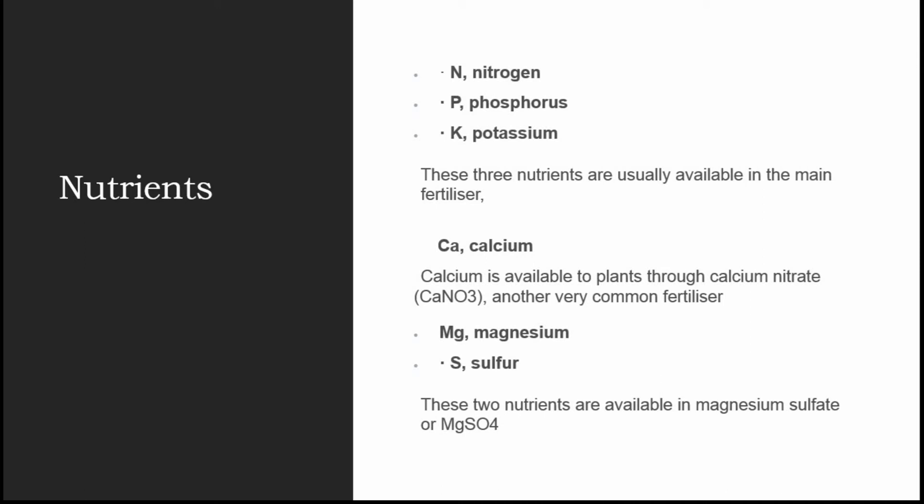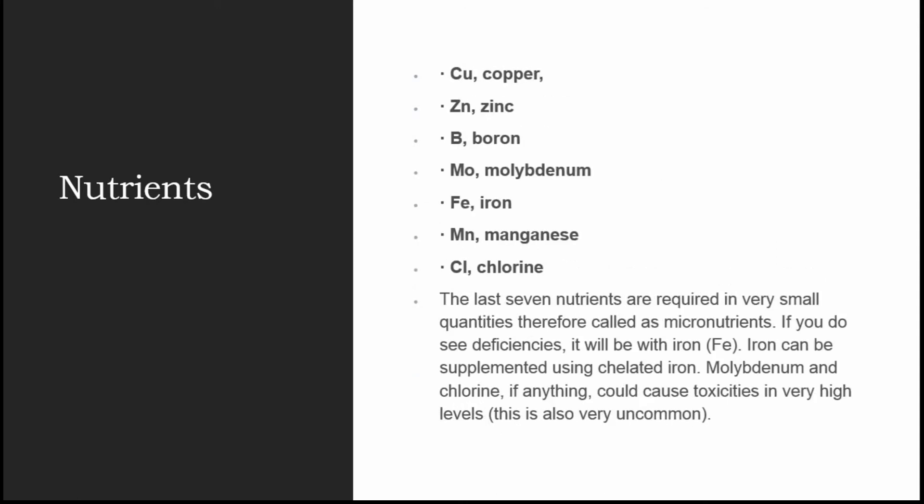Nitrogen, phosphorus, and potassium are usually available in the main fertilizer. Calcium is available to plants from calcium nitrate. Another very common fertilizer is magnesium sulfate, which provides magnesium and sulfur. The next nutrients are copper, zinc, boron, molybdenum, iron, manganese, and chlorine.